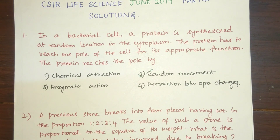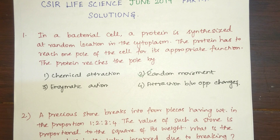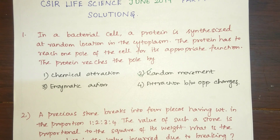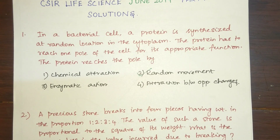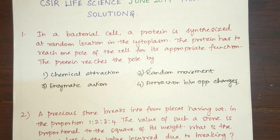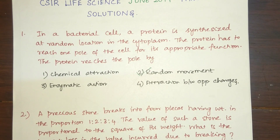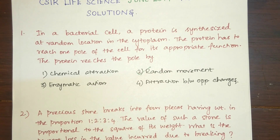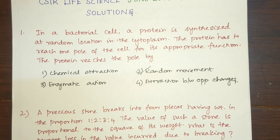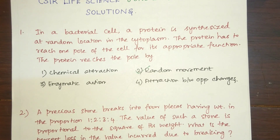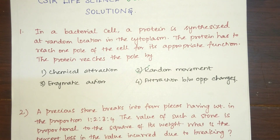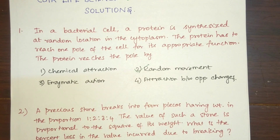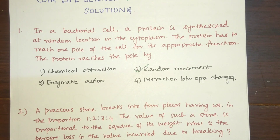Bacteria is a prokaryote — it does not have any nucleus or membrane-bound organelles like Golgi bodies or endoplasmic reticulum, whereas ribosomes are scattered around in the cytoplasm. The ribosome is responsible for protein synthesis. When the protein is synthesized, it is usually transported to other organelles in the cytoplasm by random movement. If the protein has to be delivered at the cell membrane, it is done with the help of the translocon, which sits in the cell membrane and helps the ribosome synthesize appropriate membrane proteins over it, which then get attached to the cell membrane.